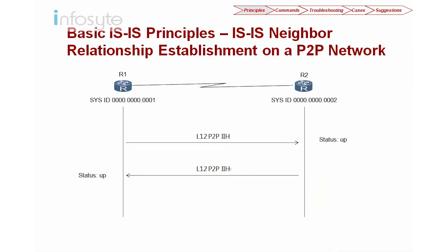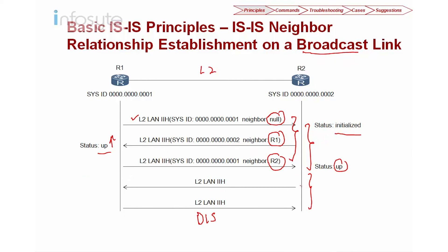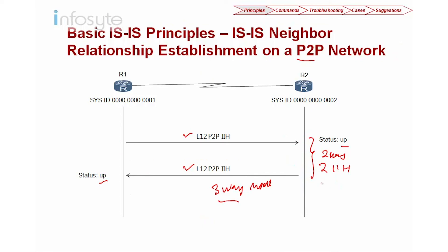Compared to broadcast networks, on point-to-point links the routers send a point-to-point IIH. R1 sends an L1/L2 point-to-point IIH to R2, R2 receives it and returns one, and both sides go Up — it only takes two IIHs to bring up the adjacency. There is also a three-way mode available; by default it is two-way. Enabling three-way mode makes it more similar to the broadcast three-packet handshake and is more secure. This can be changed through a command.